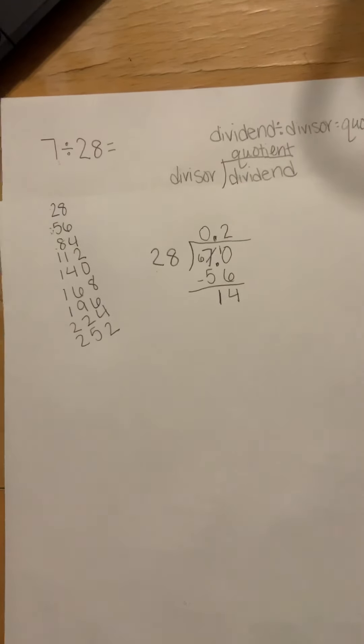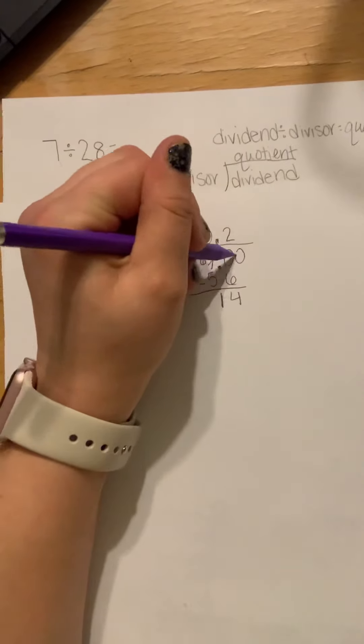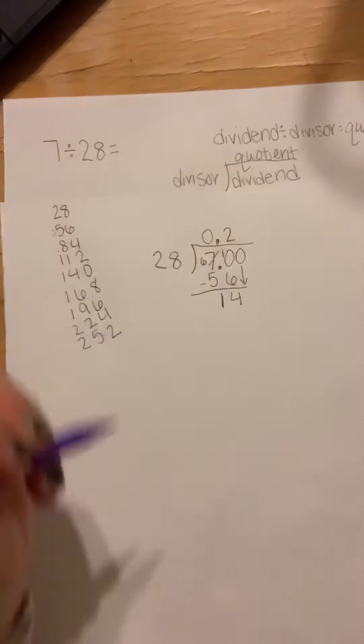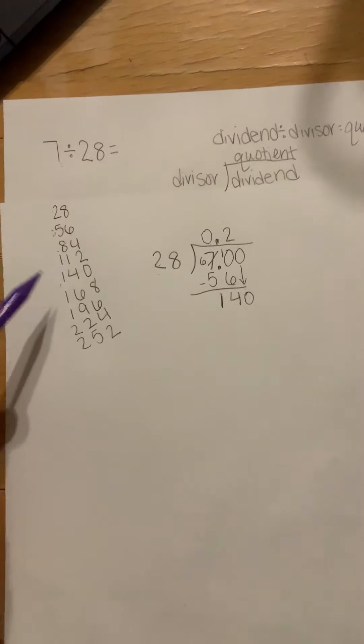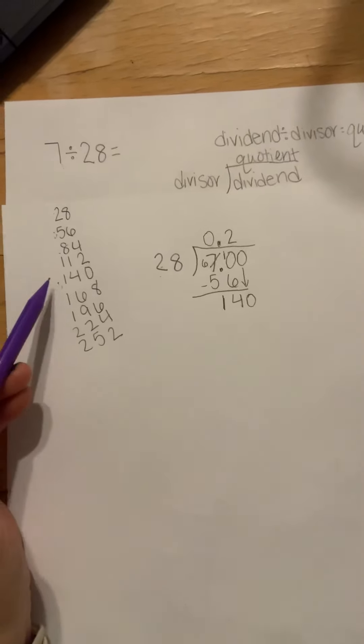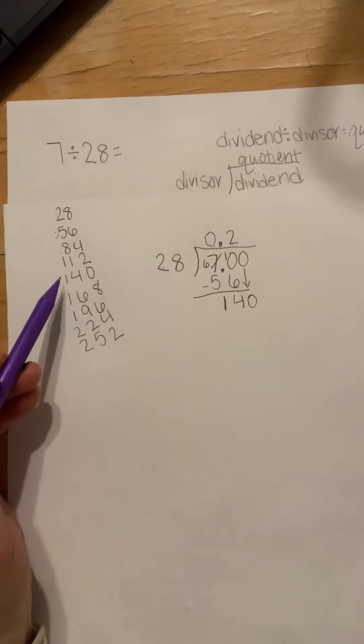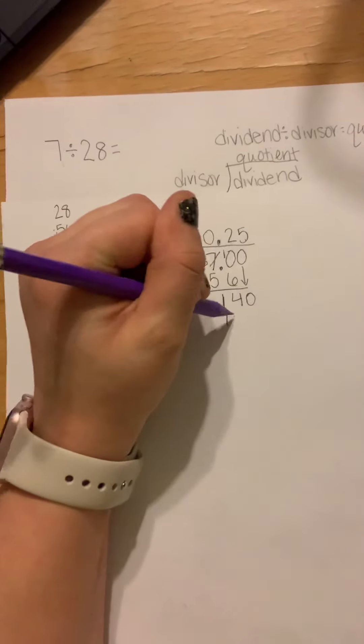You can't do a remainder of 14 when you've already started your decimal division. So I'm going to add a zero and bring that down. And now I'm going to say does 28 go into 140? Because I did my skip count right away, I know 28 goes into 140 five times.